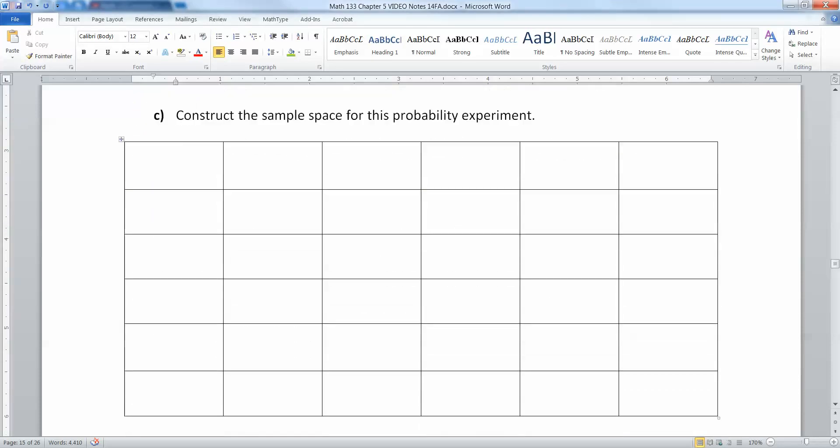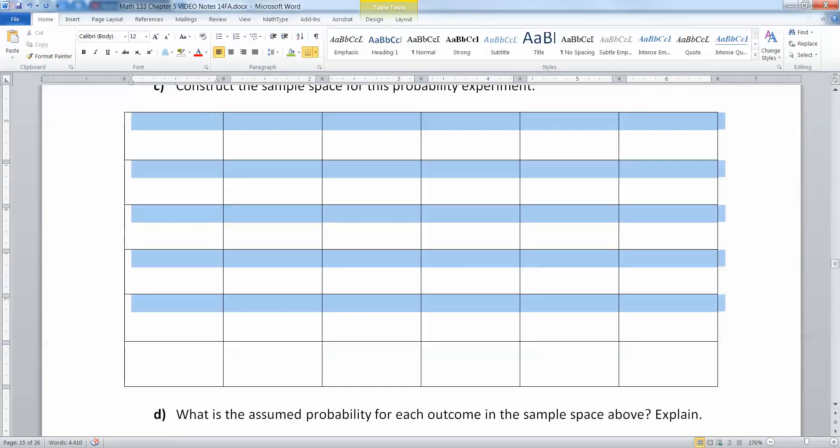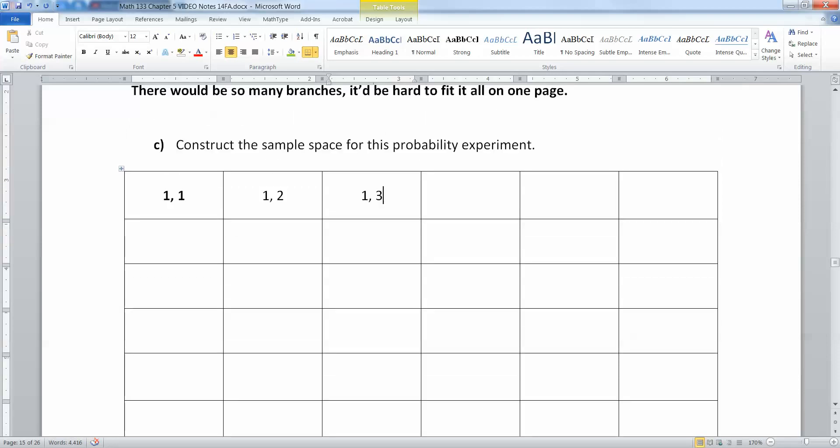Now we want to construct the sample space. We know it's six by six, which is 36, so we have six rows and six columns. So what we want to do here is we want to organize ourselves a little bit. For example, the first one would be one for the first die, one for the second die, then one for the first die, two for the second die, then one for the first die, three for the second die, and so on.